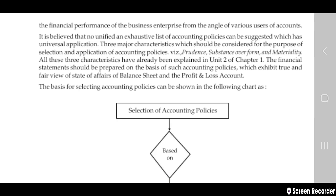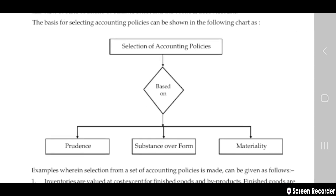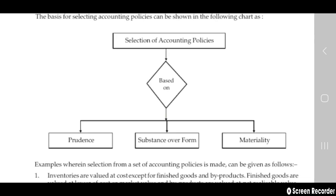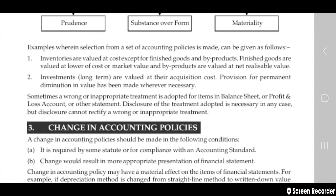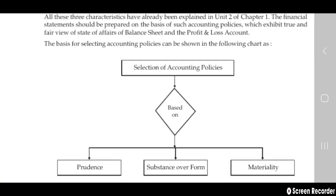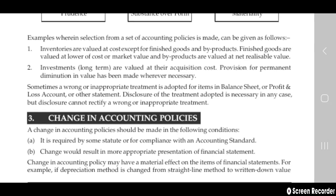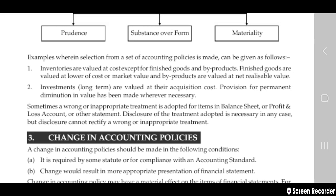The basis for selection of accounting policies can be shown in a chart: selection is based on prudence, substance over form, and materiality. Based on these three things, you can select accounting policies. An example of a selection from a set of accounting policies can be given as follows.